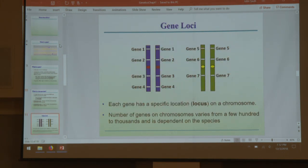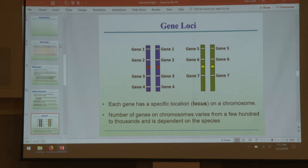Gene loci: a gene and a locus are not exactly the same thing, though we sometimes use those terms interchangeably. If a gene is a discrete region of DNA that codes for something, then its locus — or loci, plural — is the physical exact space within a chromosome that gene occupies. Across bodies of the same species, the locus will always have the exact same gene, though that gene may vary.